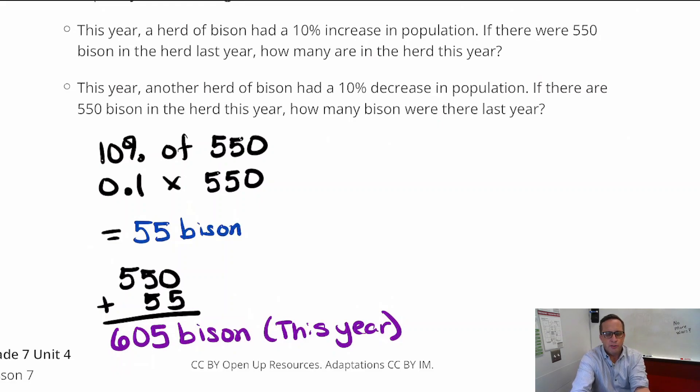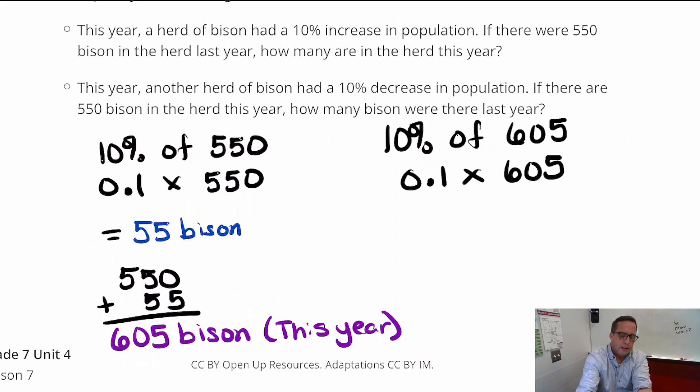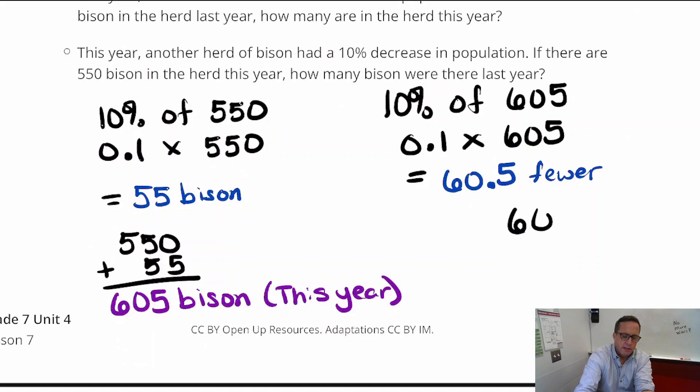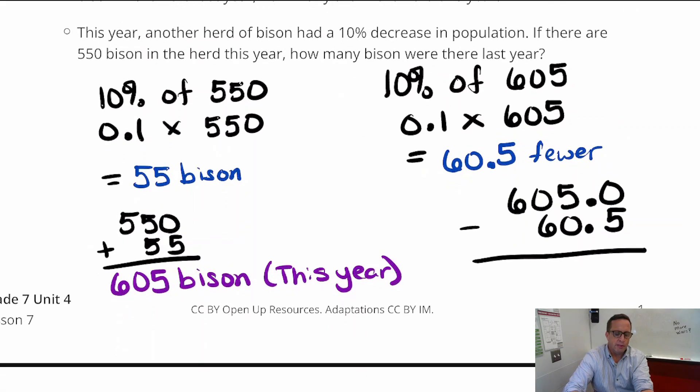So it's basically saying is it 605? That's the question. Is it 605? So let's kind of just do it this way. Let's say we did 10% of 605. Let's do that. 10% of 605 to figure out what the decrease is. Now that's going to be 0.10 times 605. And that is going to come out to 60.5 bison. So we're going to have to chop a bison in half. No, we're not. That's just kind of how that kind of turns out, but 60.5 bison. So it's going to be 60.5 fewer.